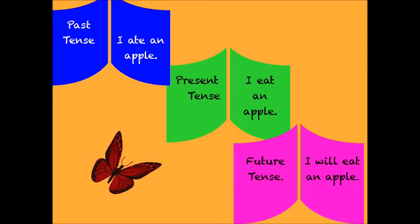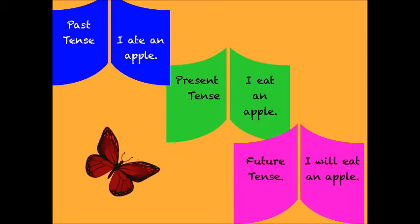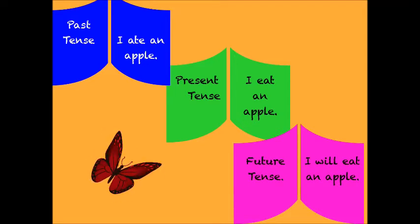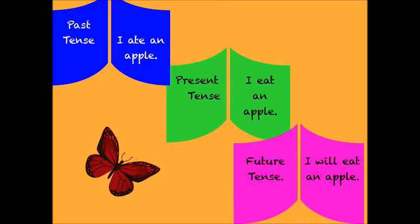Now students, let us learn about these tenses. You can see here there are three different times, and we have different tenses to express or talk about those times. I want to give you a little overview so that you understand the basic differences of these three tenses. In past we would say I ate an apple. In present we would say I eat an apple. And in future we would say I will eat an apple. So now let us learn one by one.